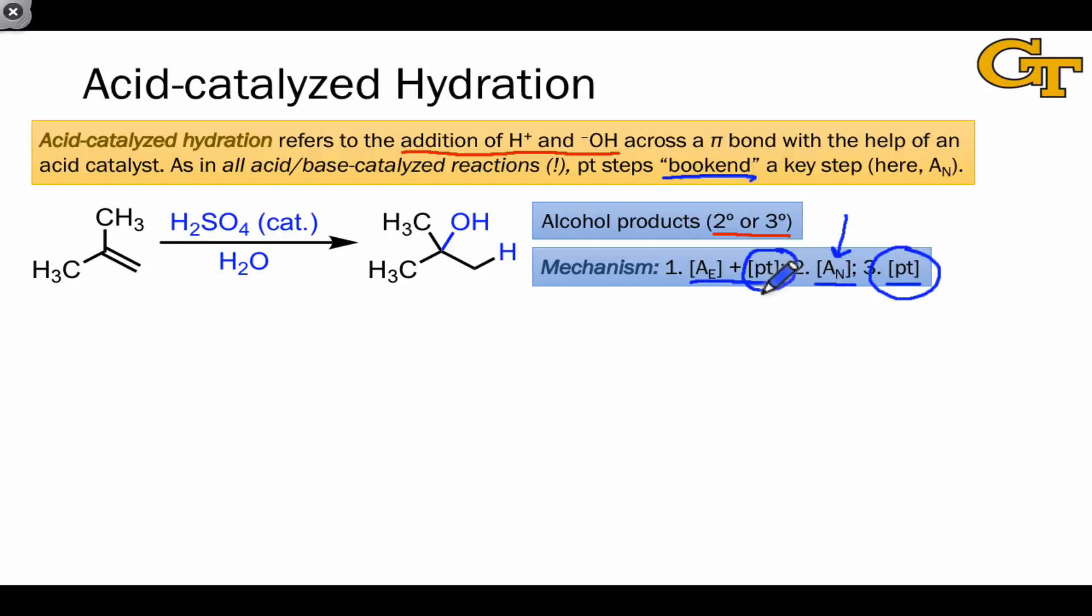One way to think about catalysis is that this first proton transfer from the acid catalyst enables the A-sub-n step to take place. It would not take place on its own, for example through curved arrows like this, in the absence of the acid. The acid is needed to encourage this process to occur.